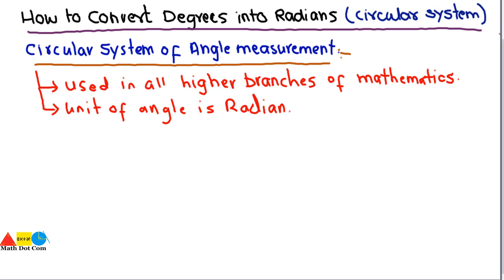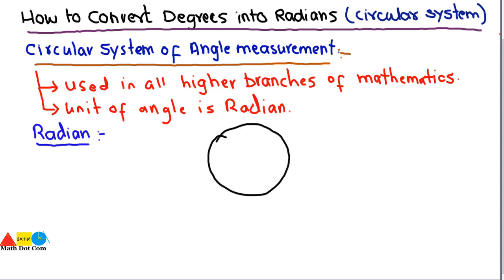Let's see what a radian is with a short overview, and then we will move towards converting degrees into radians. To understand the concept of radian, let's draw a circle. This is a circle with radius r and center O.